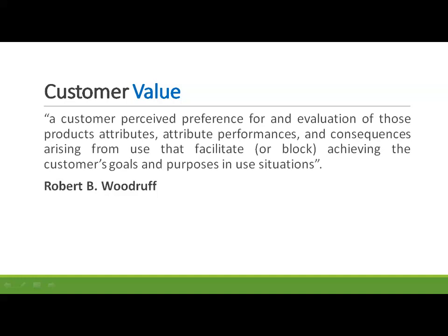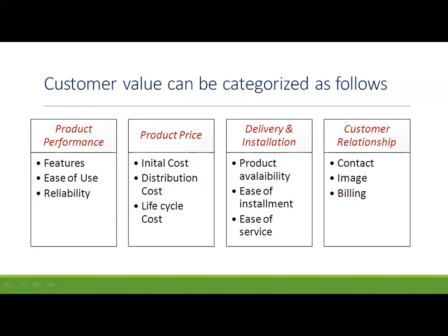Customer value can be categorized into product performance, product price, delivery, installation, and customer relationship. Product performance means the various features of a particular product — how easily you can use that product or service. For example, suppose there are two apps: the Sharekhan app and the Zerodha app. If the majority of people think the Zerodha app is more user-friendly than the Sharekhan app, that reflects ease of use and reliability — features by which we judge product performance.